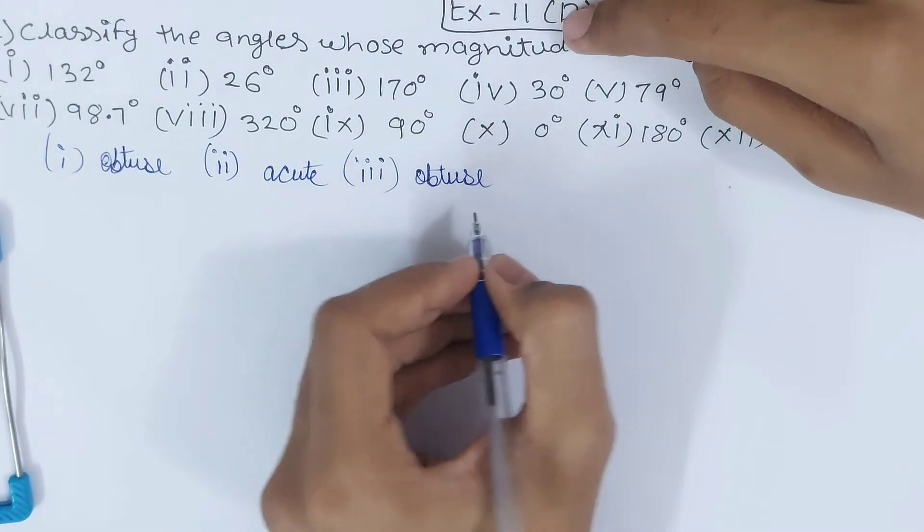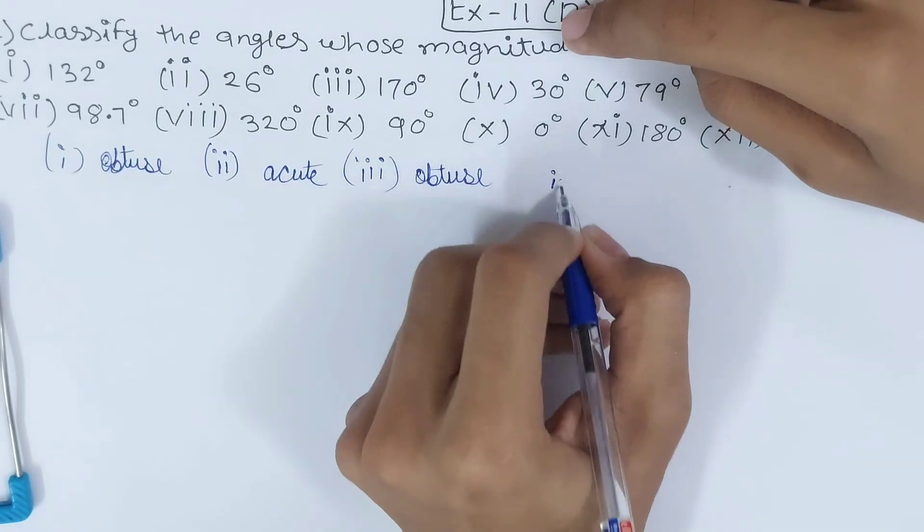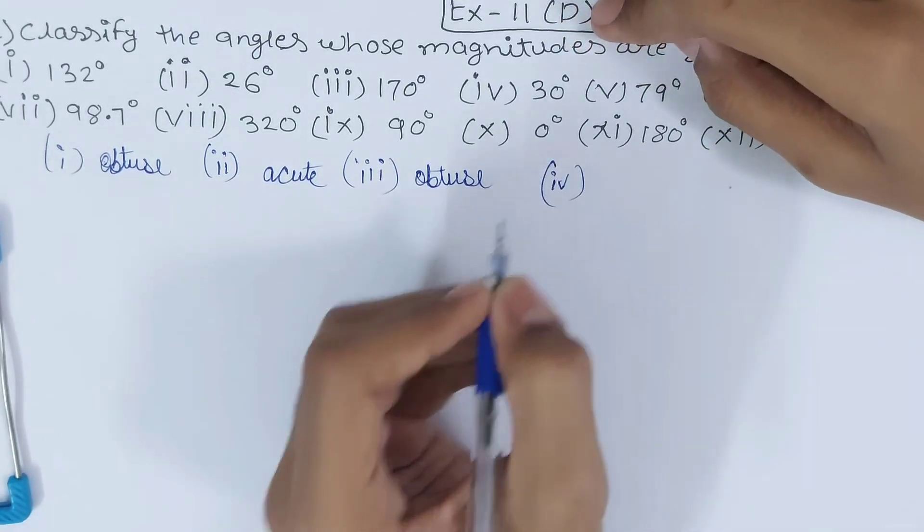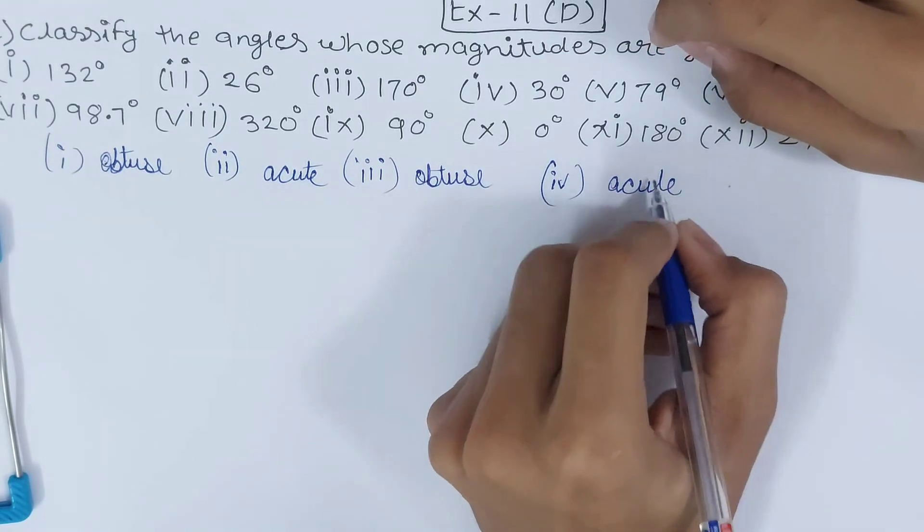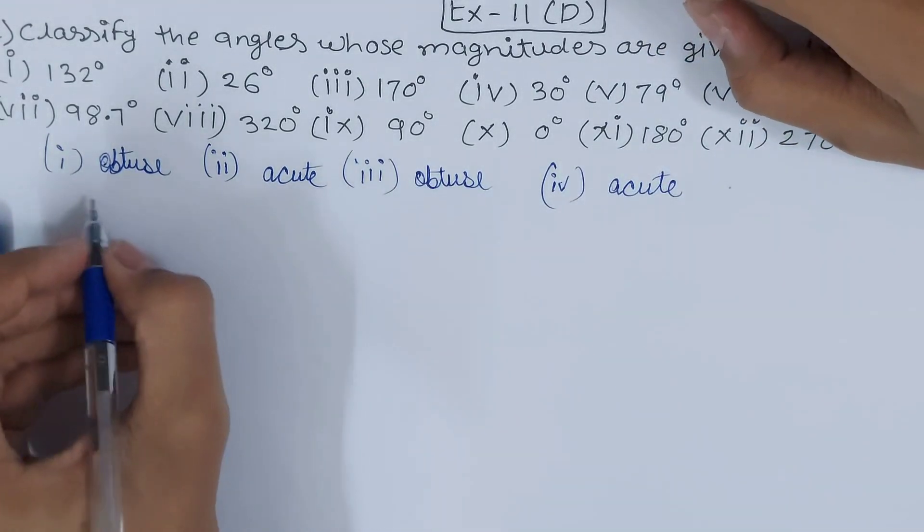Then the fourth one - 30 degrees. 30 degrees is less than 90 degrees so this is also an acute angle.